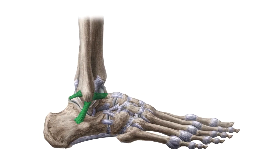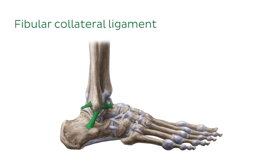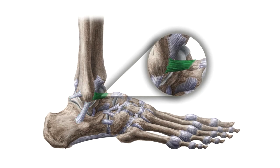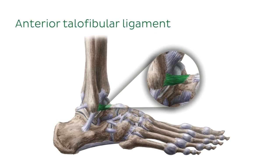The second group of ligaments is on the lateral or fibular side of the ankle. It consists of three ligaments, all highlighted in this image — one, two, and three. Together, these ligaments make up the fibular collateral ligament, also called the lateral collateral ligament of the ankle. The most anterior ligament on the lateral side, now highlighted in green, runs from the anterior surface of the fibula to the talus and is named the anterior talofibular ligament.